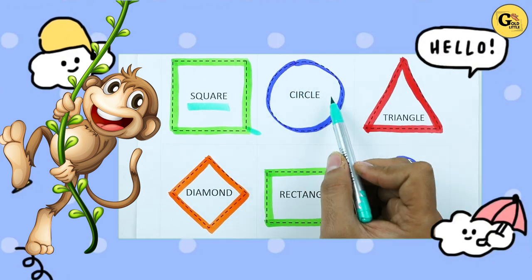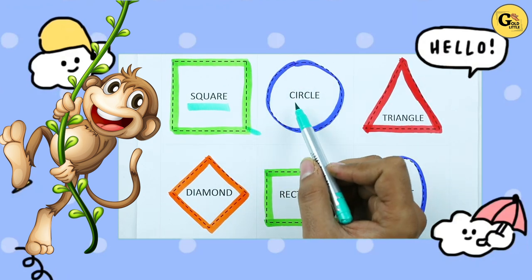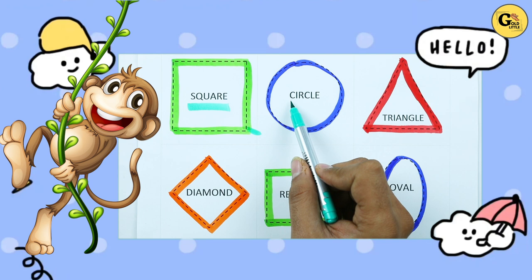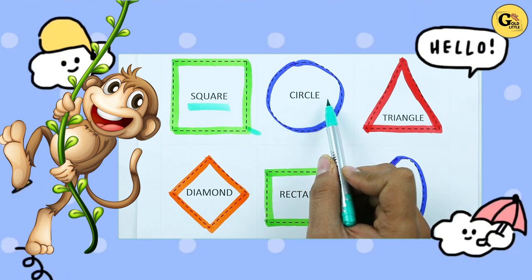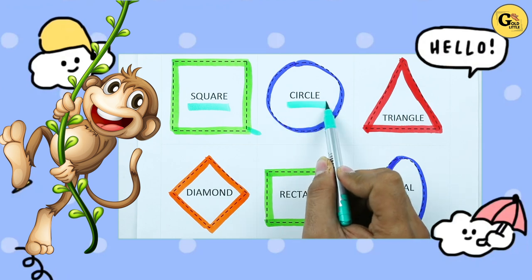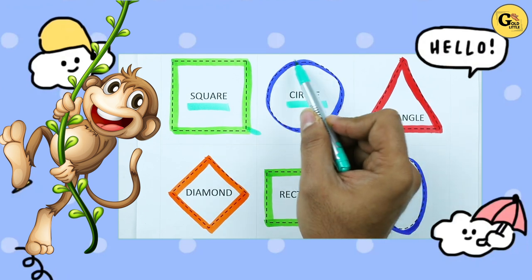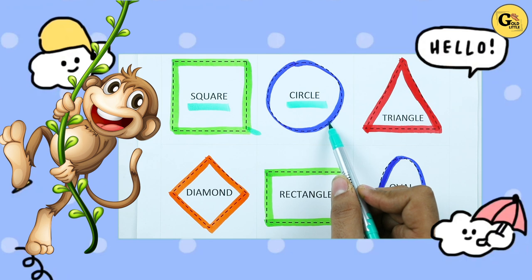Which shape is this? Circle. C-I-R-C-L-E. It's a circle with blue color.